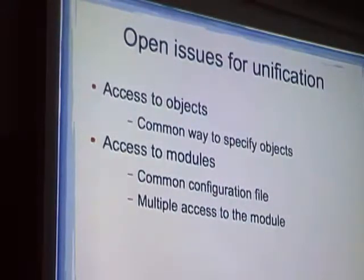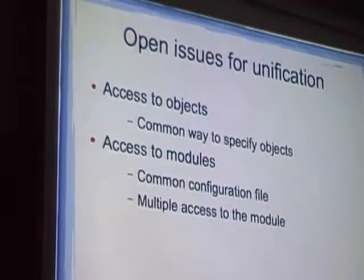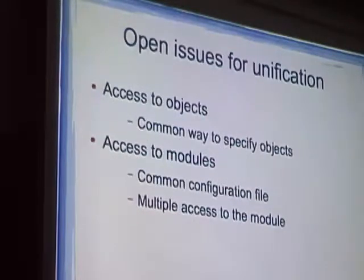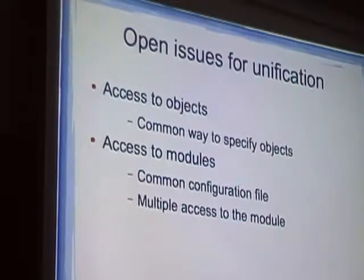To summarize: I've told you what the open problems are. I proposed a solution only to the first one, and the other one is still open. Today we have no common way to specify objects. PKCS11 URLs might be a solution — which we like in GnuTLS. We have problems accessing modules in a single application, and we have problems with a configuration file that is not there.